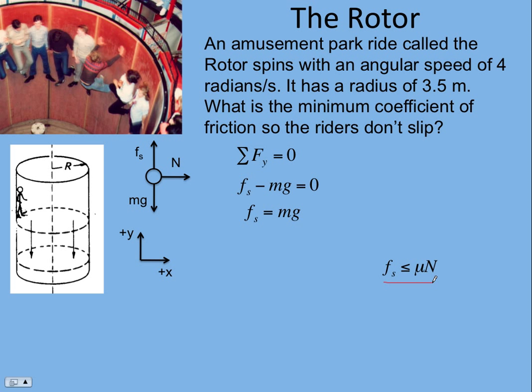We have another equation for static friction: it's less than or equal to μ times the normal force, where this is μ_static. Since we're asking for the minimum coefficient of friction, we want friction to be at its maximum value. So we can set those two equal and substitute. Now we have μN = mg.